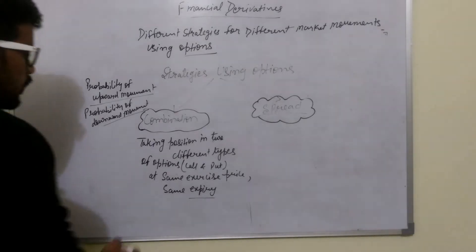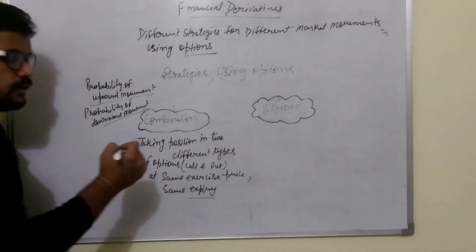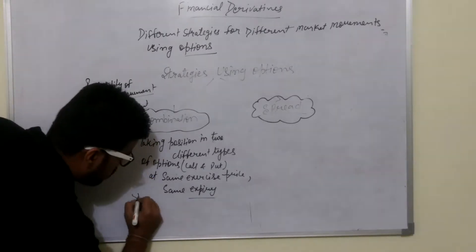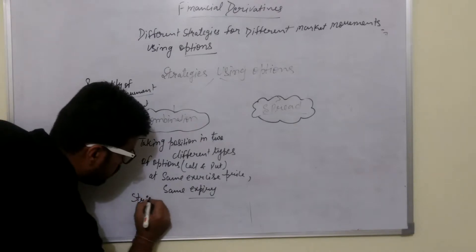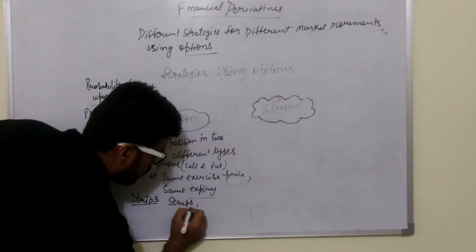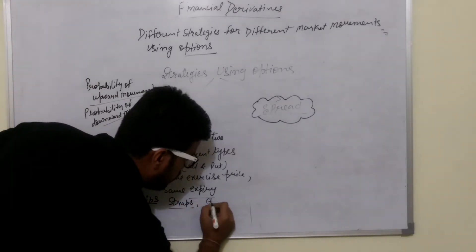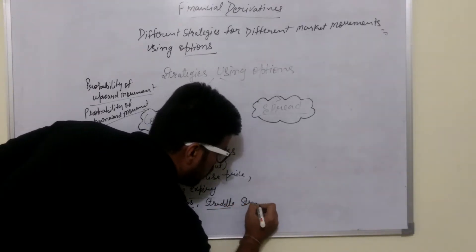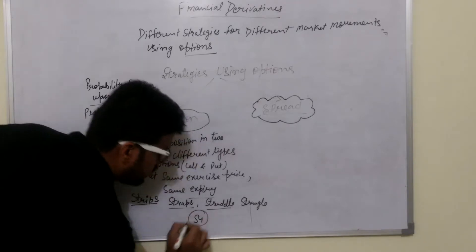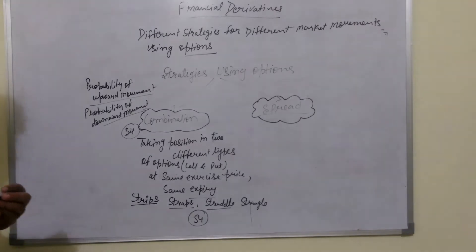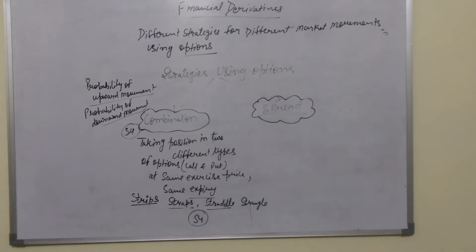There are four different types of combinations. We can remember them as S4: Strips, Straps, Straddle, and Strangle.